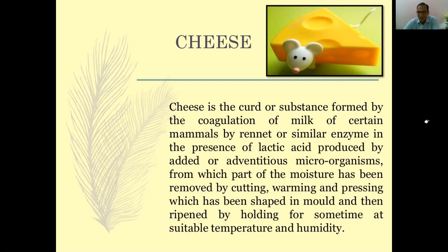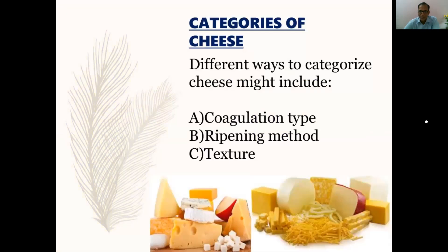Human beings love cheese — it is a fantastic milk product. There are two or three categories of cheese. They are categorized by how the coagulation was achieved, what was the ripening method, and ultimately what was the texture of the cheese. So they can be categorized based on texture, based on their ripening method, and based on their coagulation type.